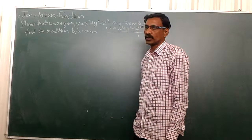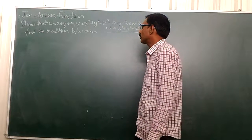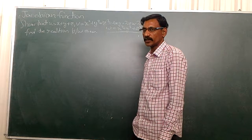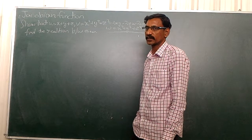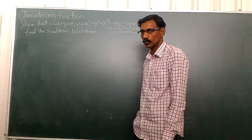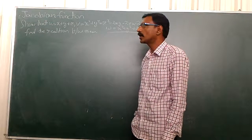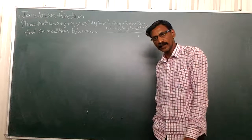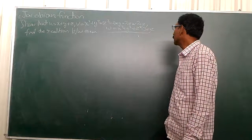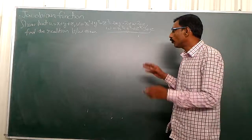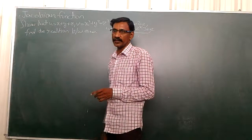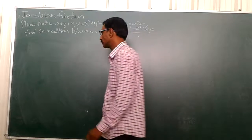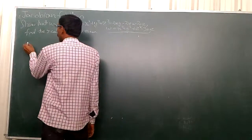Here some job of responses are given: u is equal to x plus y plus z, v is equal to x square plus y square plus z square minus 2xy minus 2zx, and w is equal to x cube plus y cube plus z cube minus 3xyz. We have to find a relation between them. I would like to take only w.